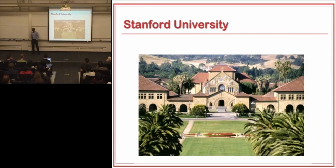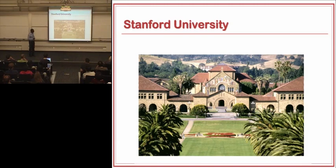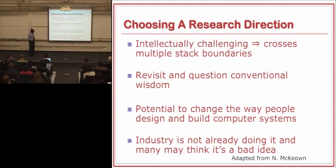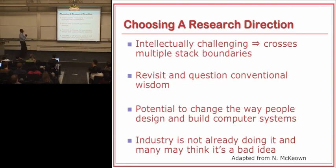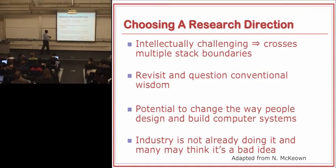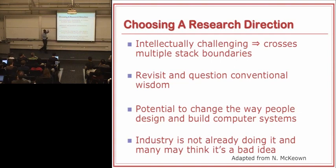Then I went off to Stanford, and the question became what research direction to go in — how to focus my research to do the sorts of things that would get me tenure at Stanford. In retrospect, this is the process I went through. Fundamentally, you want to work on something that's intellectually challenging, which for me means crossing multiple stack boundaries, not just staying within any one layer. Secondly, you really want to revisit conventional wisdom — most areas have widely accepted truths, and the question is whether these are fundamental or just an artifact of the way things have always been done.